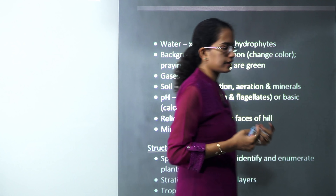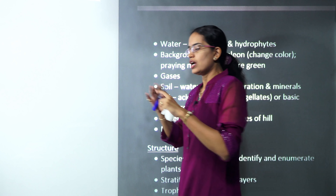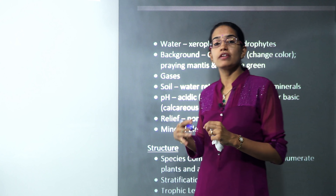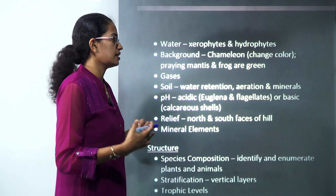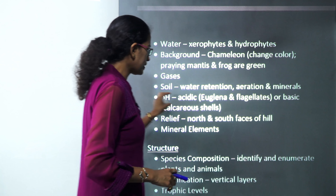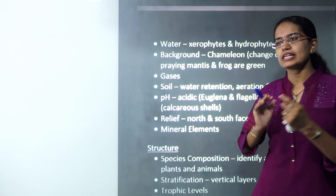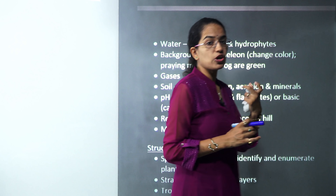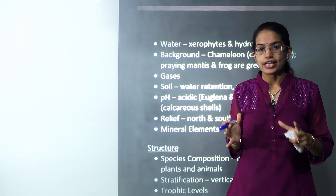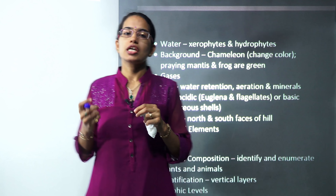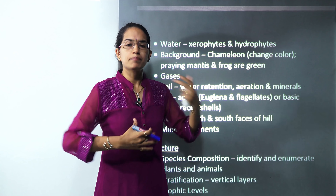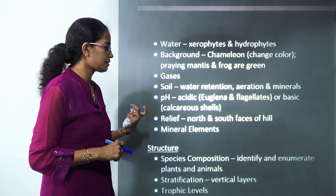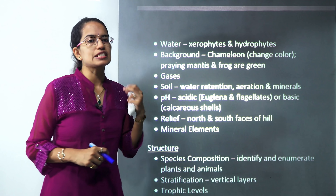Some organisms adapt themselves to their environment — for example, frogs are green based on their surrounding. Some can even change colors, like chameleon, which changes color based on background. Then you have pH of the soil — pH ranges from 0 to 14, with 7 being neutral. If the pH is high or acidic, detritivores cannot survive. Detritivores grow in soil that is alkaline or basic. However, Euglena and flagellates are present in acidic surroundings.